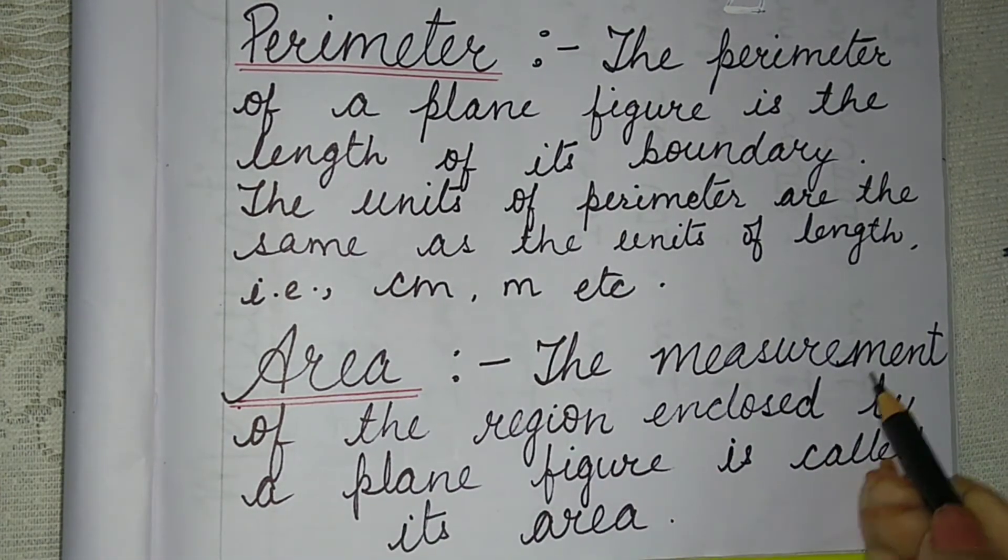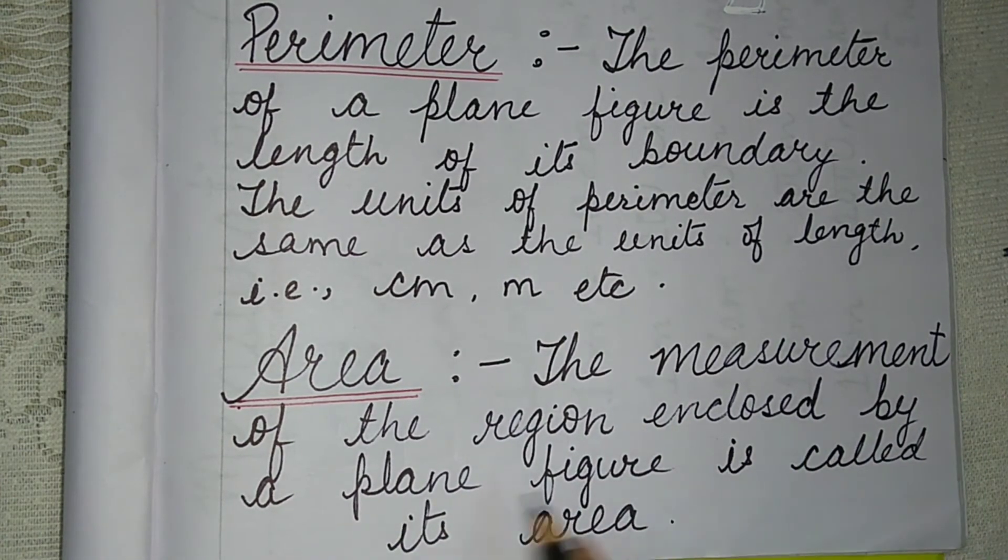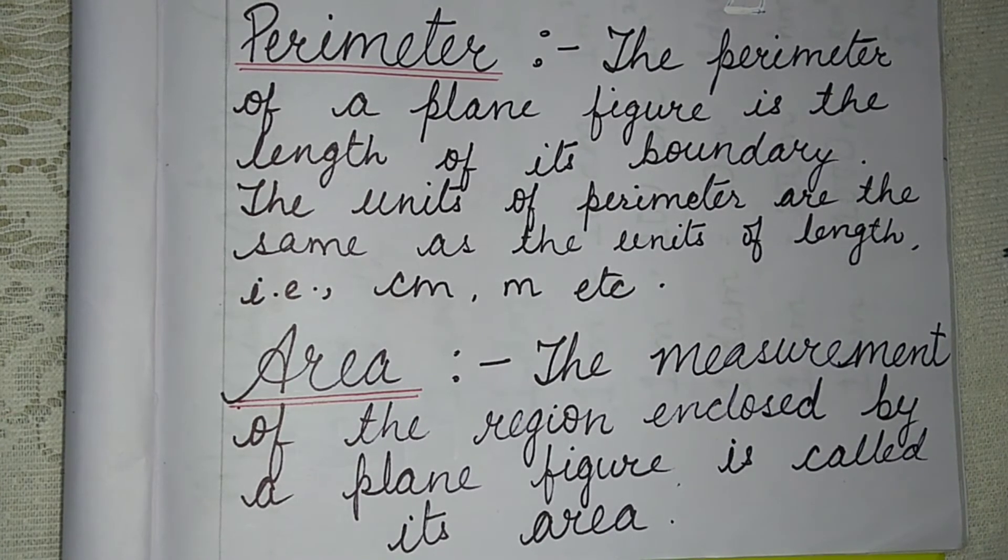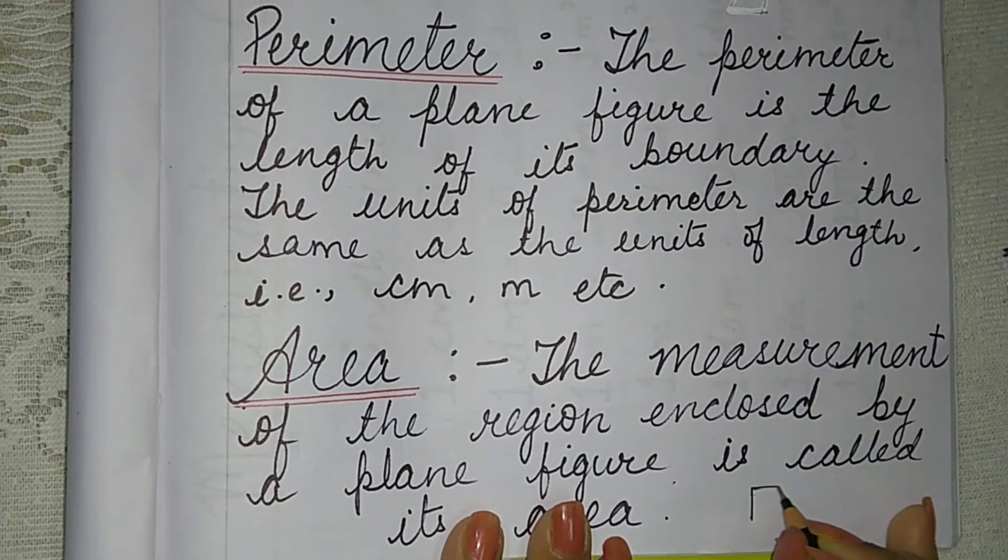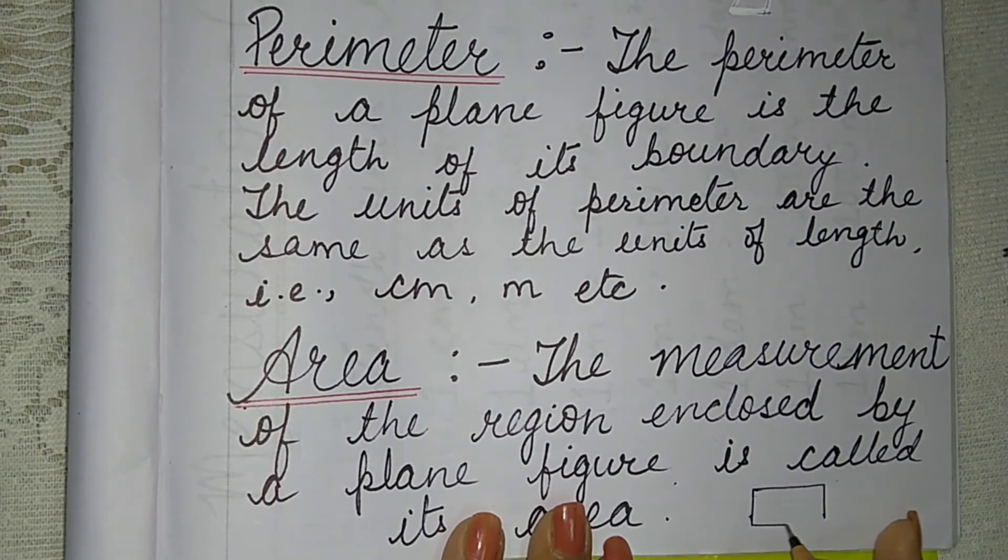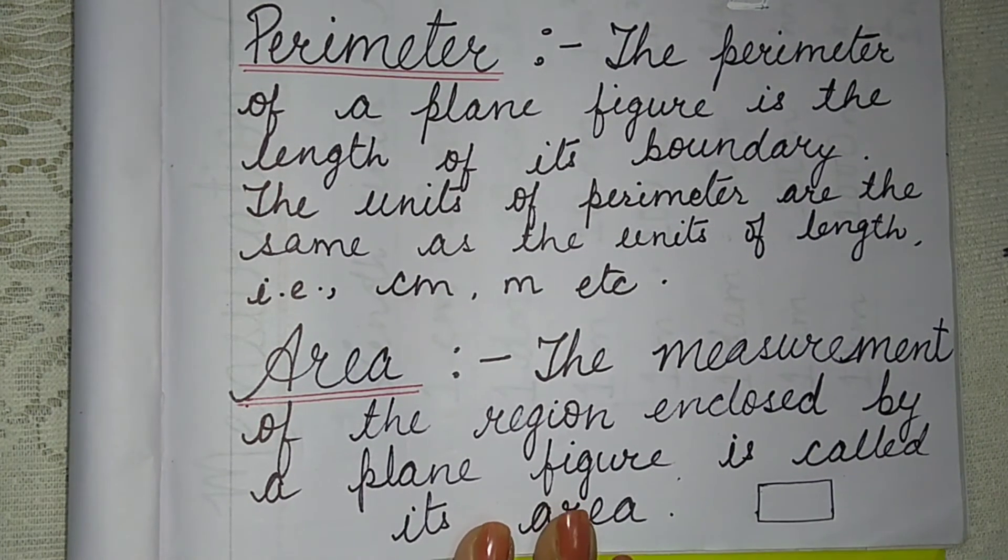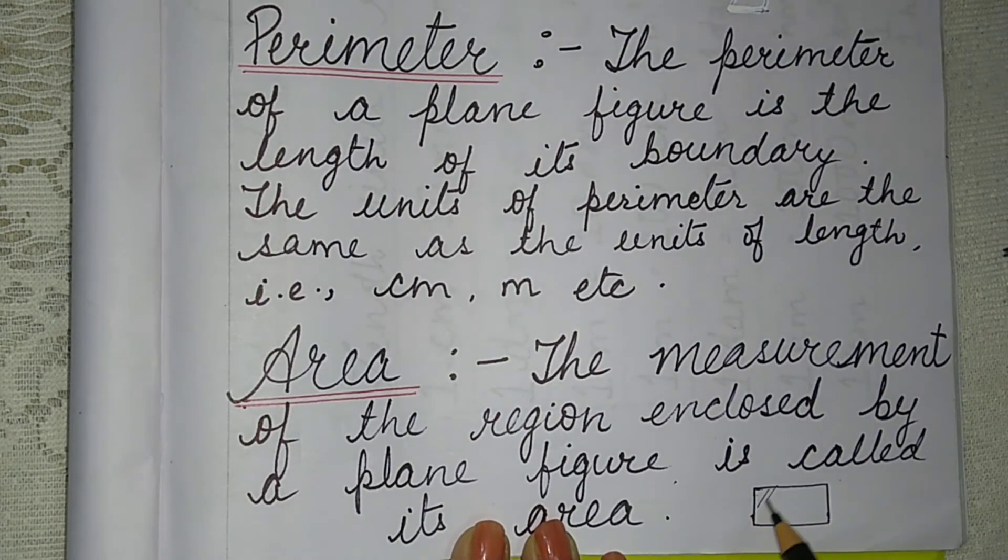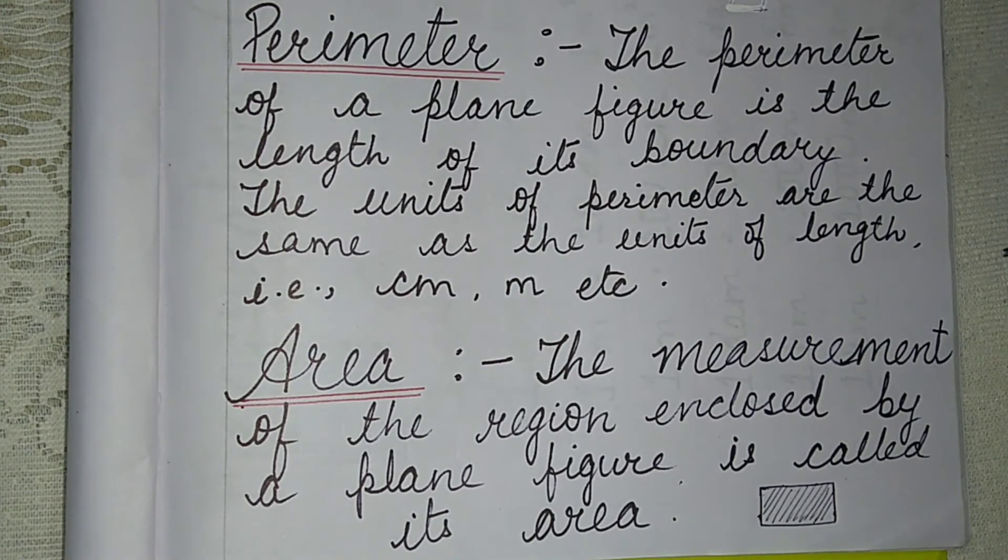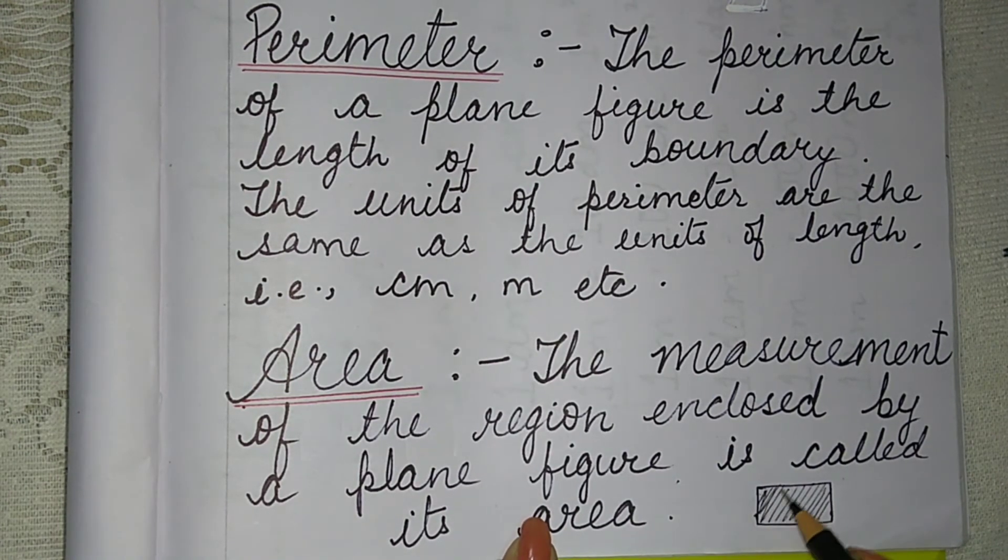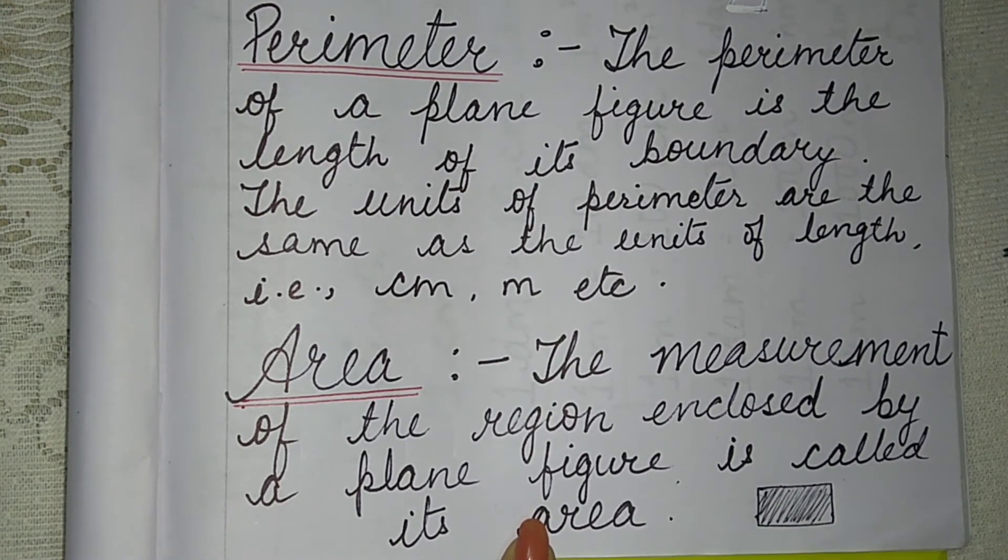Area. The measurement of the region enclosed by a plane figure is called its area. What does this mean? Suppose we are taking a rectangle. This is a rectangle. If you ask its area, then the inside part is called the area. We call this area. This inside part is called its area.